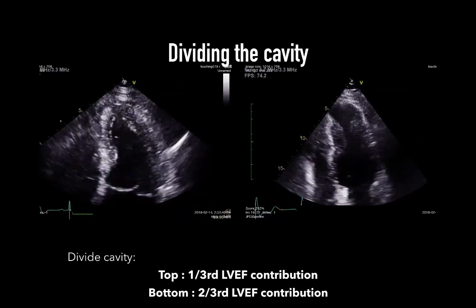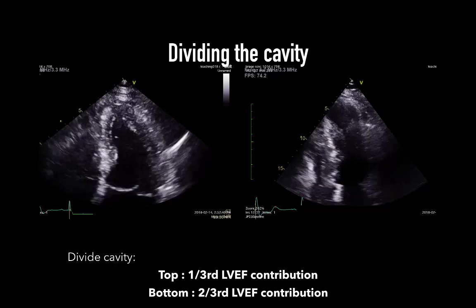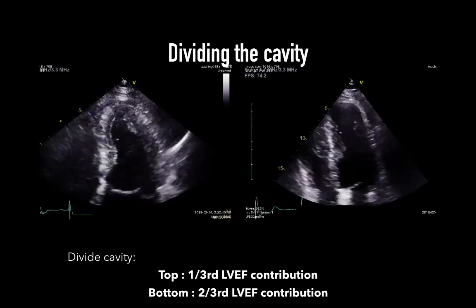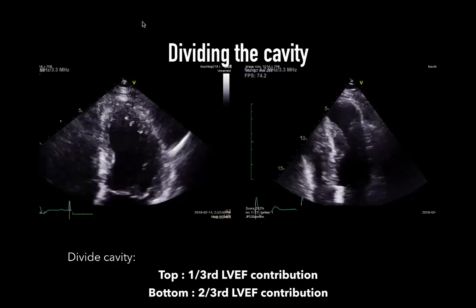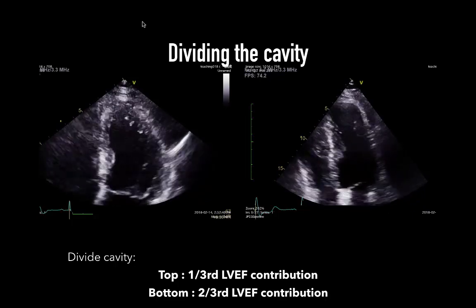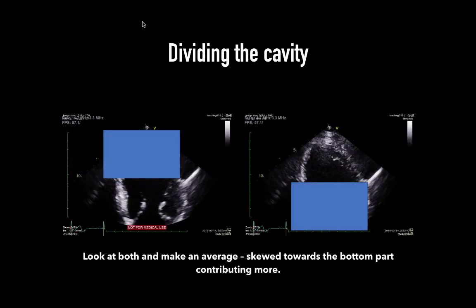One thing to remember is that these cavities are bullet-shaped, and thus not every region contributes as much volume ejection as others. While the diameter of the cavity may look only slightly bigger in the basal segment compared to the apex, the volume is cubed. In some instances, LV dysfunction might be apical but not always. A quick way to account for this is to divide the cavity in two halves and estimate the LVEF separately.